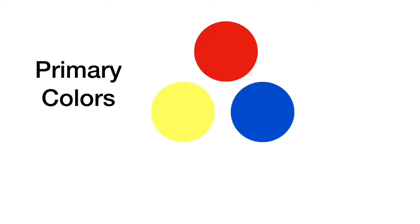These are the primary colors: red, yellow, blue. They are the colors you use to mix all the others. You cannot make them. They are already there. They are the first colors.